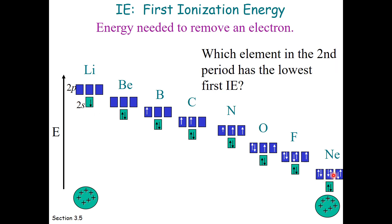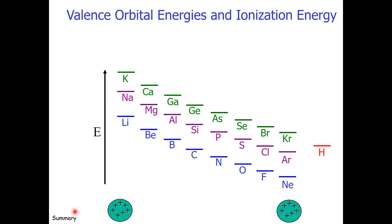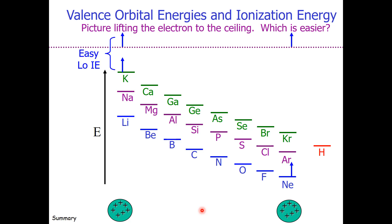Neon would have the highest first ionization energy. So here is a summary of valence orbital energies and ionization energy. You notice it looks exactly like the radius diagram. Except this time, we're going to picture lifting the electron to the ceiling. Which is easier? An electron that belongs to potassium? Well that's pretty easy to lift to the ceiling. We don't have to lift it very far. Whereas neon would hold very tightly to its electrons and it would take considerable energy to pull that electron away from the nucleus to the ceiling. So an electron that can be removed easily has low ionization energy. An electron that is difficult to remove has high ionization energy.